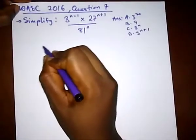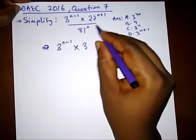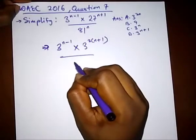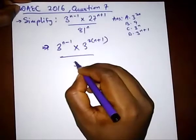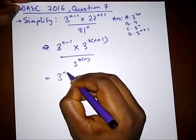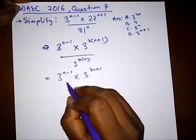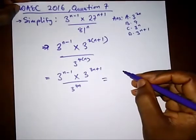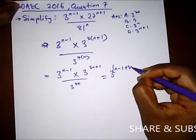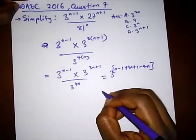So here what we have is 3 raised to the power of n minus 1, multiplied by 3 — since 27 is 3 cubed — giving bracket n plus 1, over 3 — since 81 is 3 to the power 4 — giving 4n. So we have 3^(n−1) multiplied by 3^(3(n+1)) over 3^(4n). Applying the law of indices, we add the exponents in the numerator: n minus 1 plus 3n plus 3, over 4n.